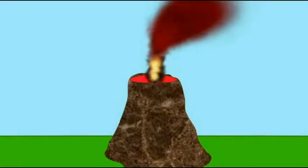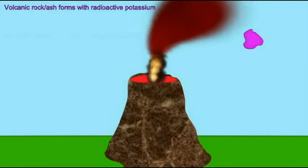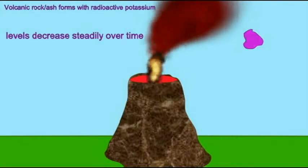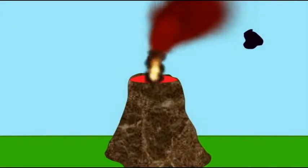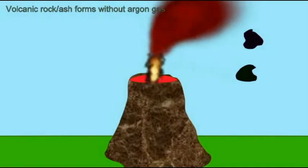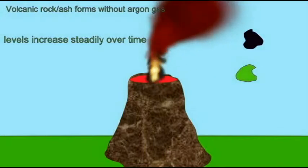When volcanic rock or ash is formed, there is a certain amount of radioactive potassium which forms in the new rock. As far as we can tell, the amount of radioactive potassium in the Earth's mantle stays about constant. This level then begins to decrease over time after the eruption. As these rocks go from purple to black, this simulates the loss of this radioactive potassium.